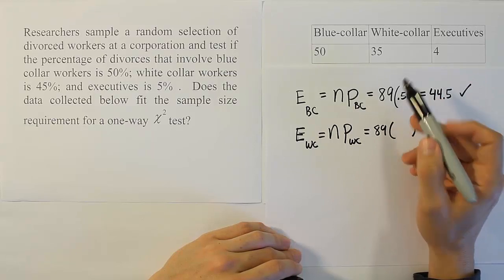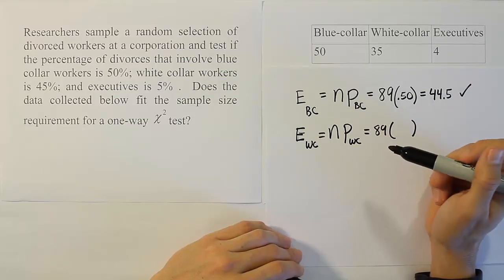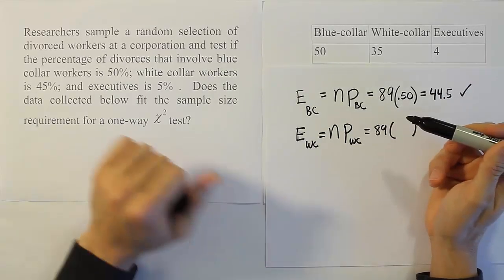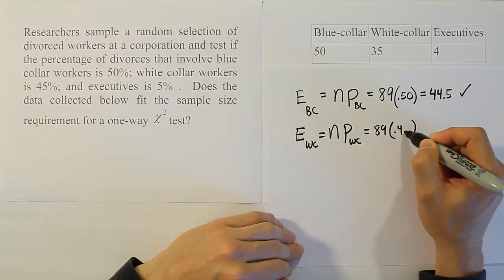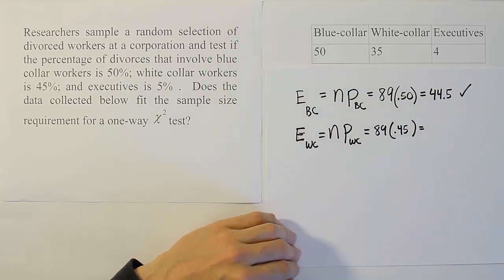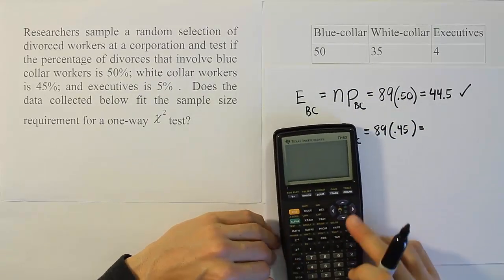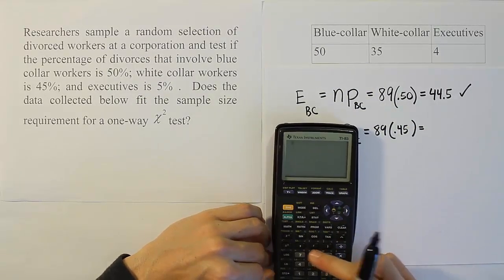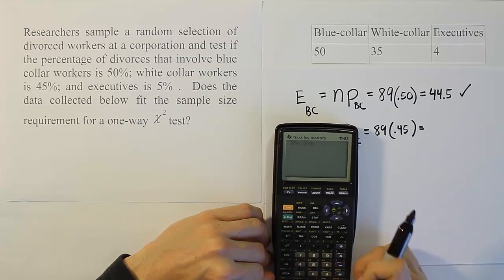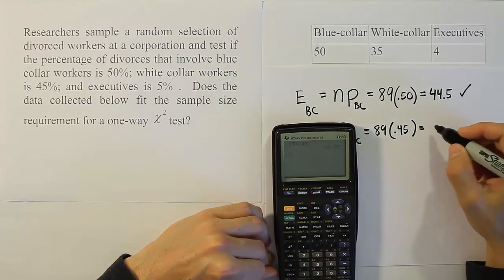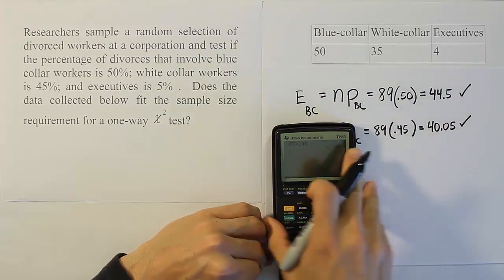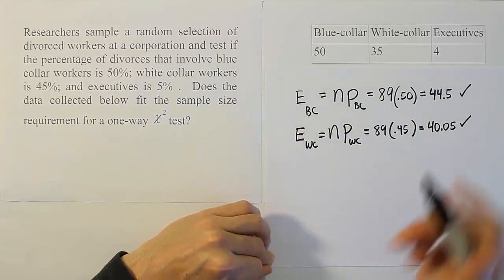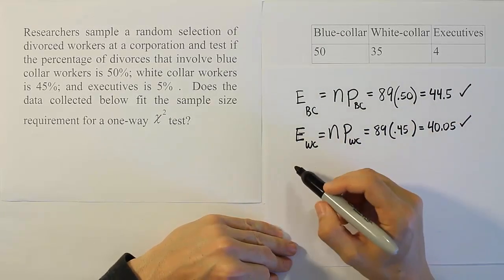The white-collar category's percentage is supposed to be 45%. We don't even have to do the work here. We can see 45% of 89 is also going to be bigger than 5, but we can check. It's 89 times 0.45, which comes out to be 40.05. That also is bigger than 5, which is what we're supposed to have.